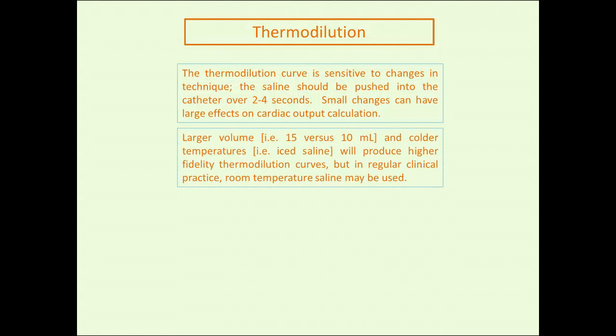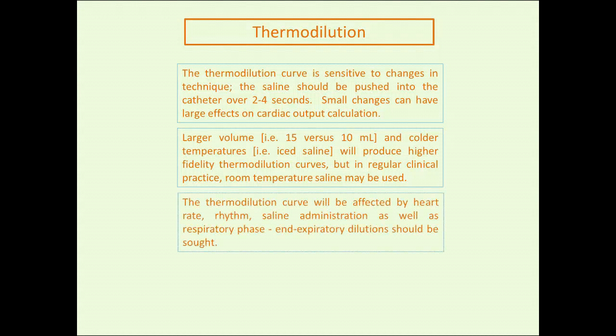If you really want high-fidelity thermodilutions, you should use a larger volume—15 versus 10 cc's—and colder temperatures: iced saline produces higher-fidelity thermodilution curves. But for the most part there's really no difference between the two, which is why you'll see nurses using 10 cc's of ambient temperature saline to obtain your thermodilution.